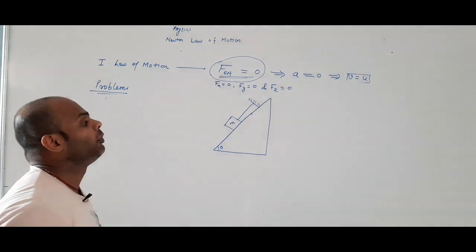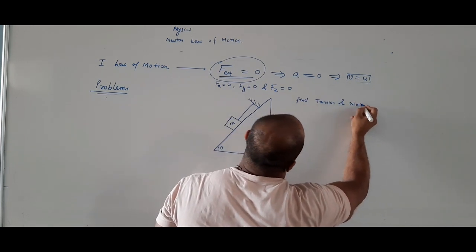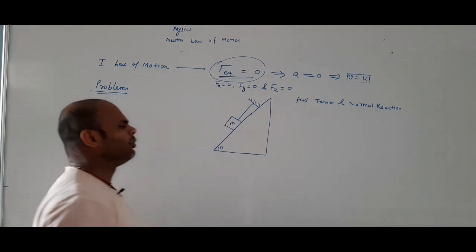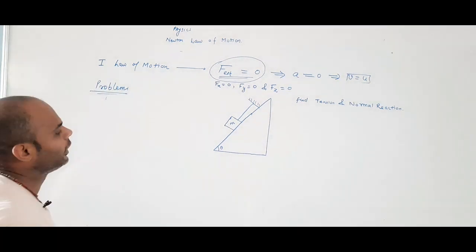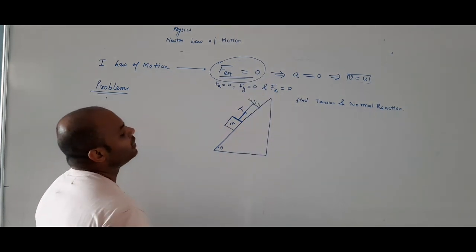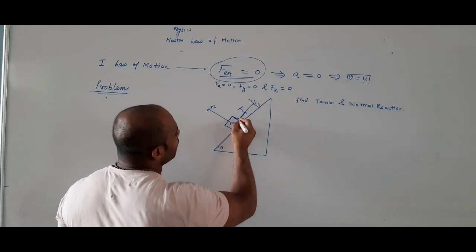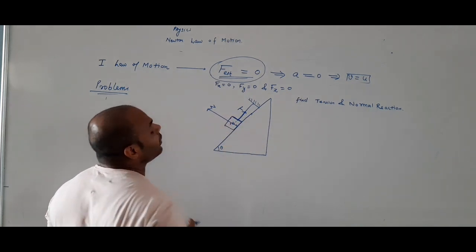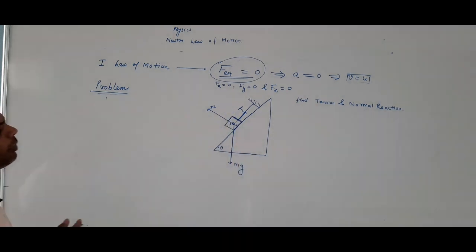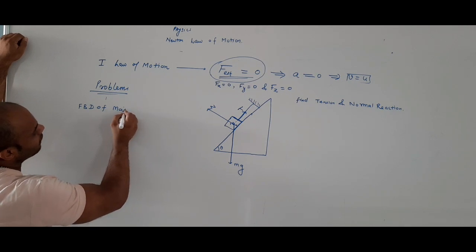Is block ka FBD banaenge. Normal reaction surface se perpendicular lagega. Weight mg bilkul seedha neeche towards the center of the earth lagega. FBD of mass M block mein: upar string ki tension T, side mein normal reaction N (dono ke beech 90 degree), aur bilkul neeche MG.